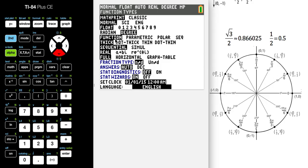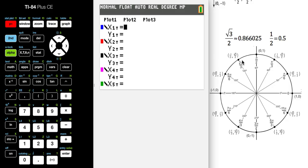Then you're going to go down one more and select parametric because we need it to be in parametric equations. Then you're going to put some equations in.